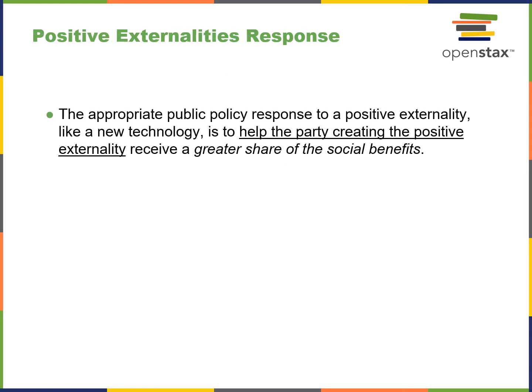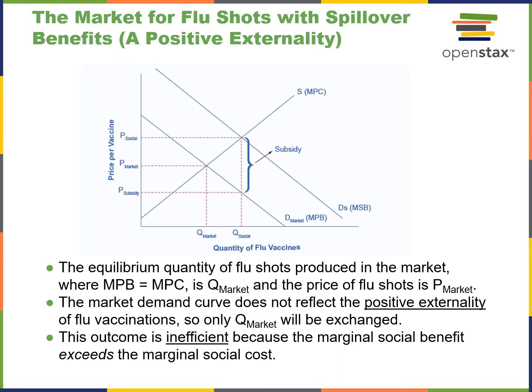The public response to a positive externality is to help the party creating that positive externality receive a greater share of the social benefit. An example is the market for flu shots with spillover benefits — this is considered a positive externality. The equilibrium of flu shots produced where marginal private benefit equals marginal private cost represents the market quantity at the market price. The market demand curve does not reflect the positive externality of flu vaccinations, so Q-market will be exchanged. This outcome is inefficient because the marginal social benefit exceeds the marginal social cost.